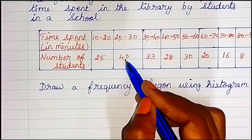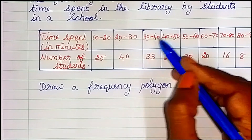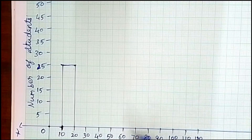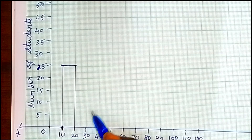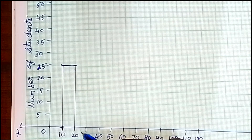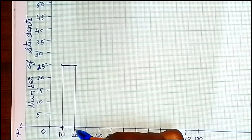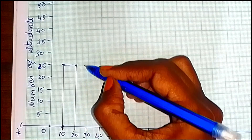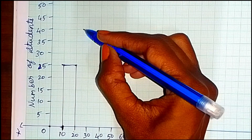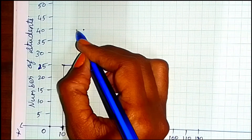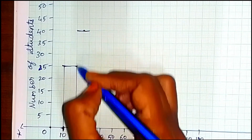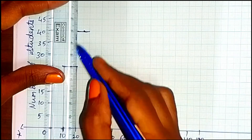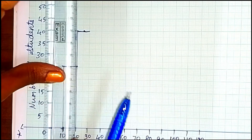Next, 20 to 30 has 40 students, and 32 to 40 has 33 students. So for 20 to 30 we draw the right side up to 40 students. The rectangle is complete. Then we join with the dark line to complete the next rectangle.